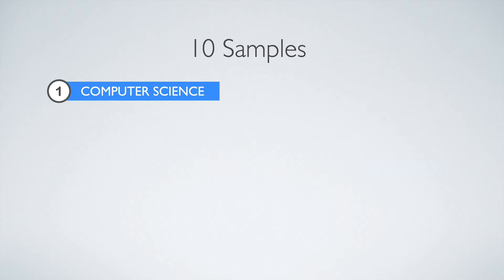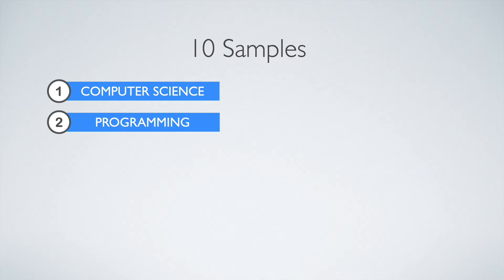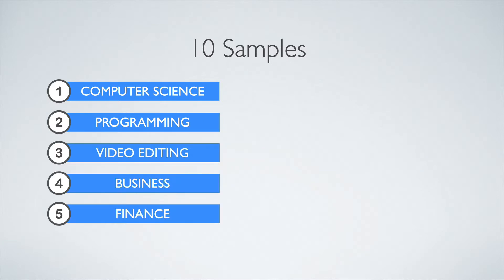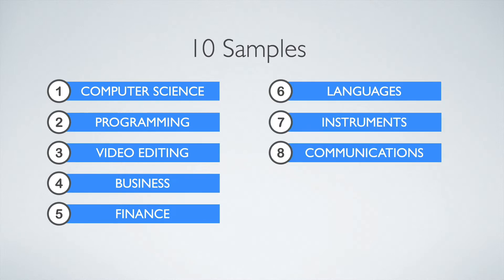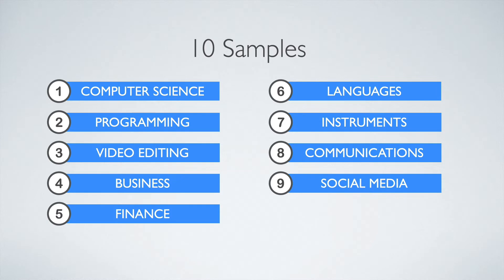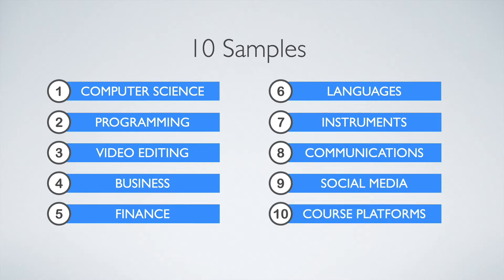The first one is going to be computer science. Then we've got programming languages, video editing tools, business advice, finance advice, learning languages, learning instruments, communication tools, social media tools, and finally, different course platforms. We're going to use Google Trends to figure out, if we were to choose any of these topics, which course would be the ideal one to create based on the keywords that are most popular. Let's do it.